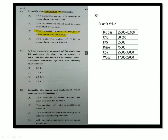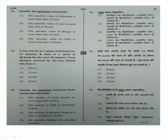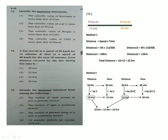Next question: A bus travels at a speed of 50 km/h for 12 minutes and then at a speed of 40 km/h for the next 18 minutes. Total distance covered by the bus during this time is? Using distance = speed × time: First case: 50 × (12/60) = 10 km. Second case: 40 × (18/60) = 12 km. Total distance = 10 + 12 = 22 km.